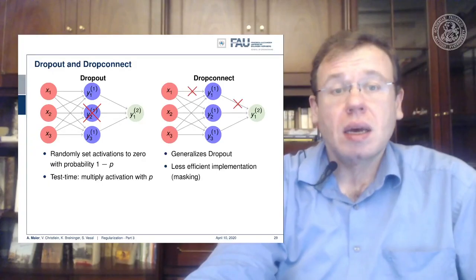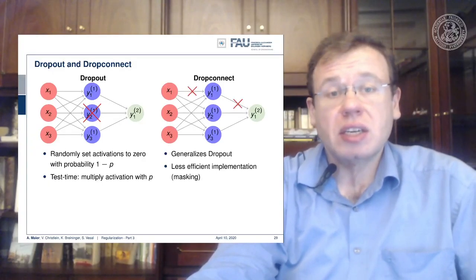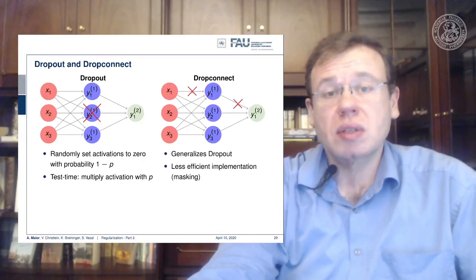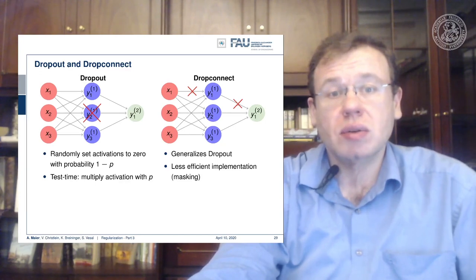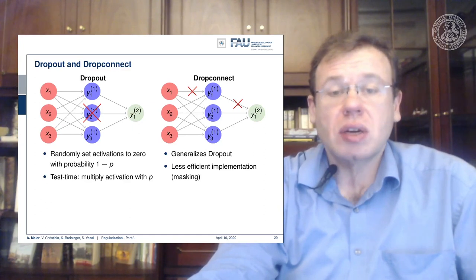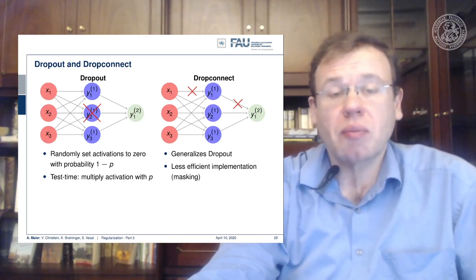And, you know, nothing in machine learning is exact, right? Also interesting is a generalization that is drop connect. Here you don't kill all of the activations of an individual neuron, but you kill the individual connections. So you randomly identify connections that are set to zero. And this could be seen as a generalization of dropout because you have more different ways of adjusting it.